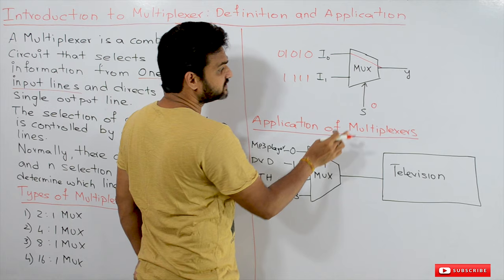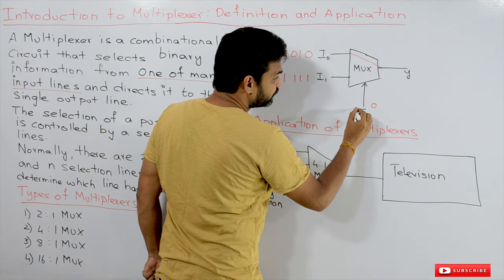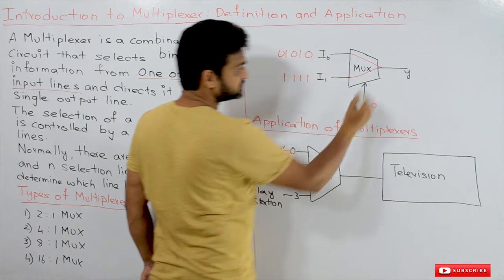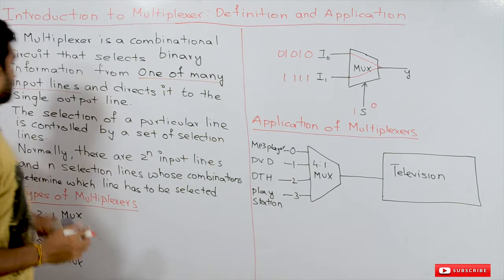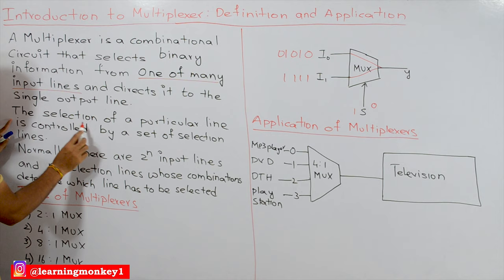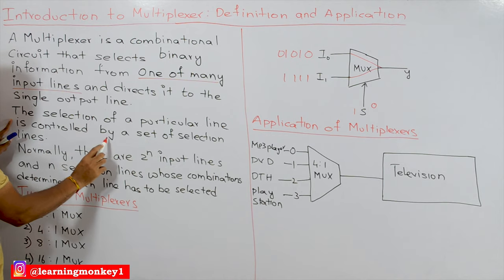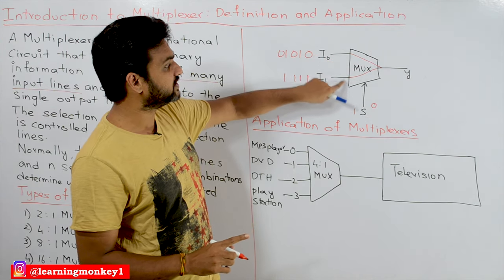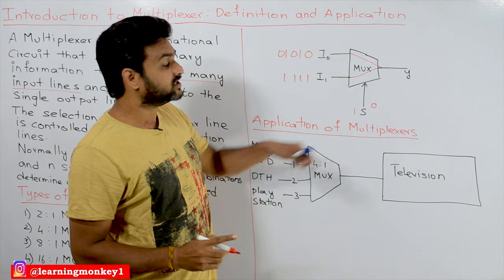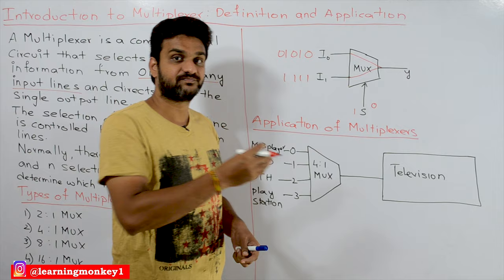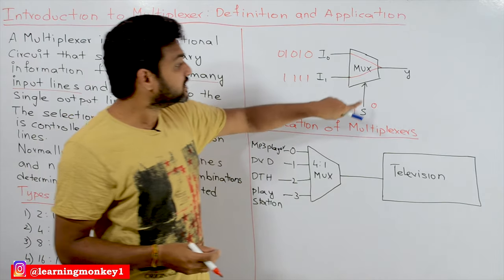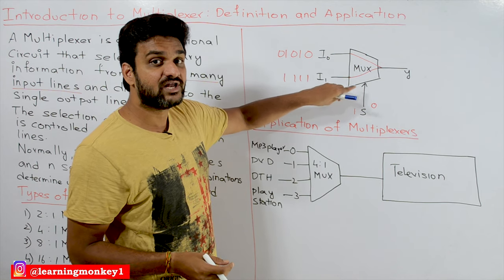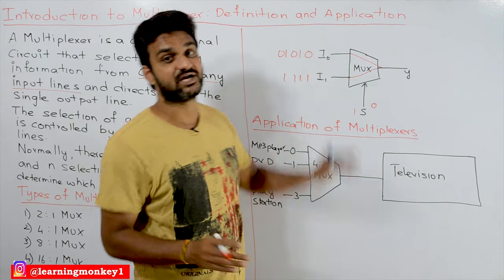Similarly, if you would like to transfer data through i1, you have to give 1 to the select line and that binary information will get transferred to the output line. The selection of a particular line is controlled by the set of selection lines. Because we have only two inputs, we have only one selection line, and these selection inputs help us select from the available inputs.